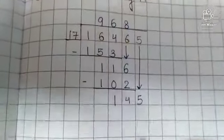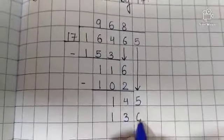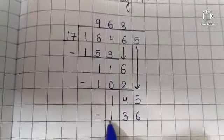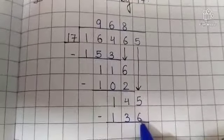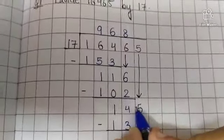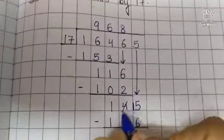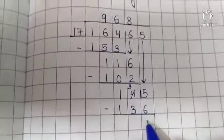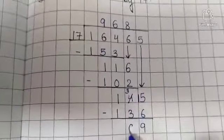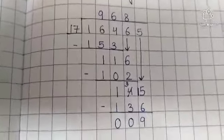17 eights are 136. Subtract. 5 minus 6, so we will take one borrow from this 4 which makes this 15 and this 4 will become 3. Now 15 minus 6 is equal to 9. 3 minus 3 is 0 and 1 minus 1 is 0.